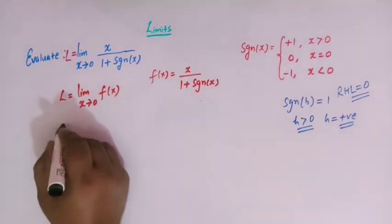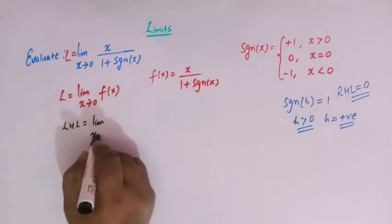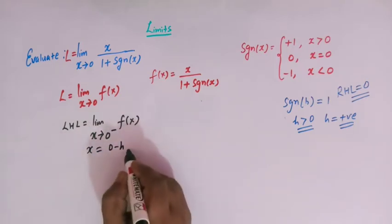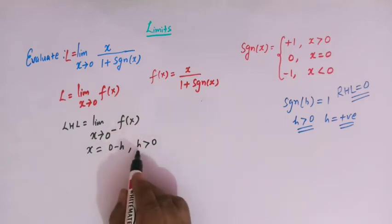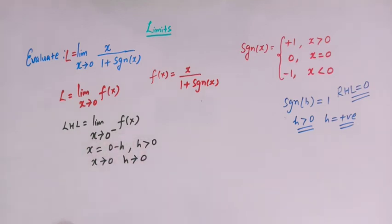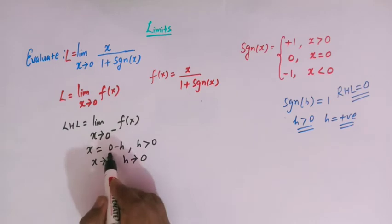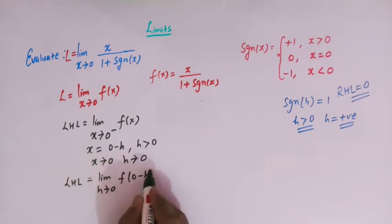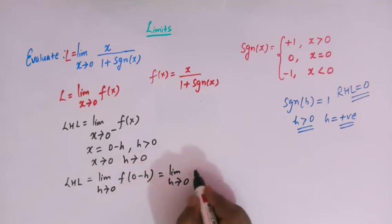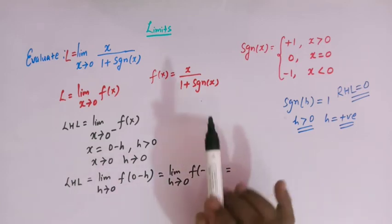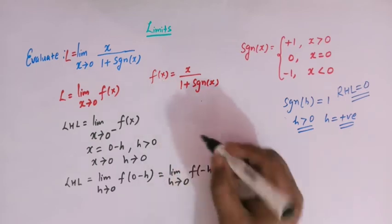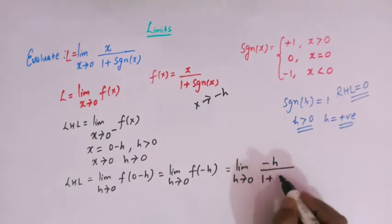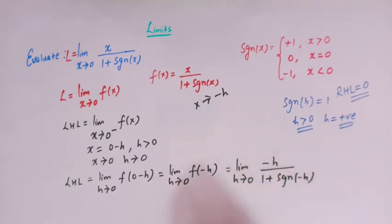Now let us find the left hand limit. The notation is limit x tends to 0 minus of f of x. We take x equal to 0 minus h, where h is again a positive finite quantity and h tends to 0. So the left hand limit equals limit h tends to 0 of f of minus h, which gives limit h tends to 0 of minus h over 1 plus signum of minus h.